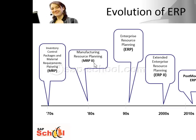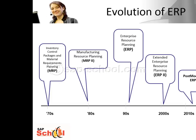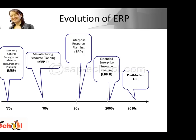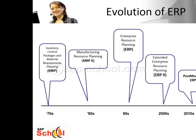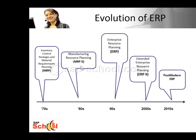Then in the 80s we moved to manufacturing resource planning, extending from materials to manufacturing, also known as MRP2. The scope now increased to cover the whole of manufacturing, and the software applications were used for coordinating all the manufacturing processes — from product planning, parts purchasing, inventory control, and product distribution. Then in the 90s the scope expanded further to include all the other key business function modules like finance, accounting, and human resources in addition to manufacturing and inventory management, and now the system was called the ERP system — enterprise resource planning.